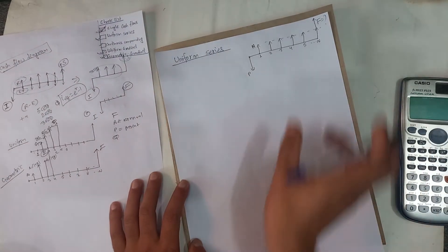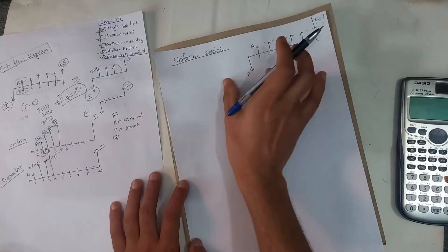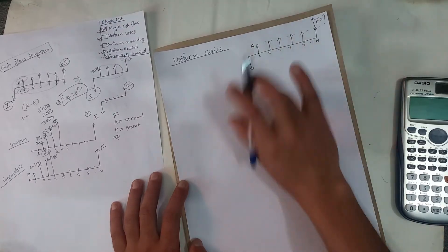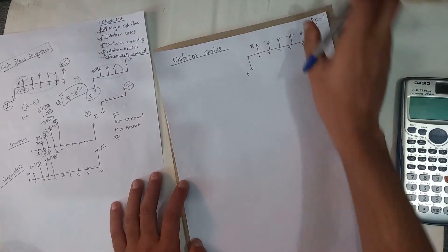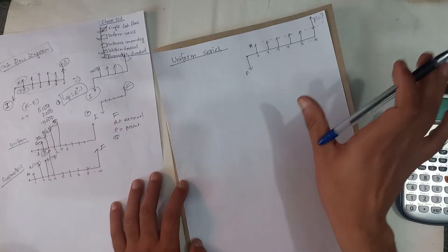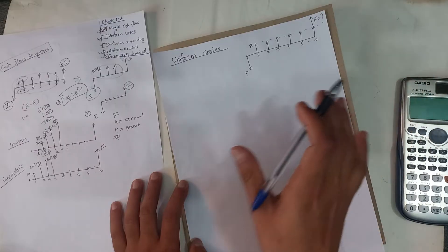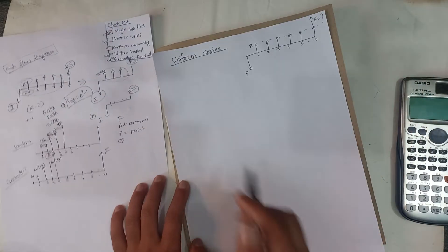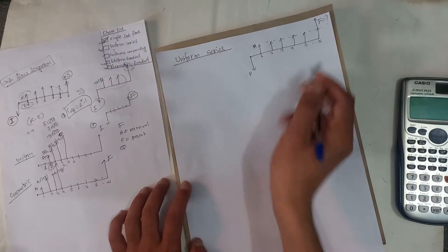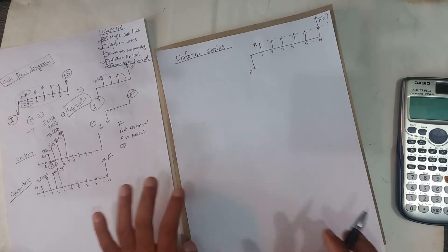It is called present worth. It is also called single cash flow. Now what are we going to do?